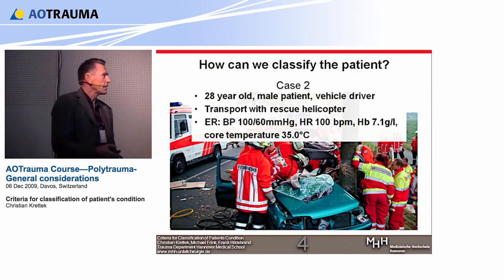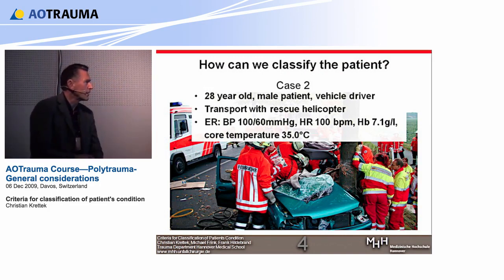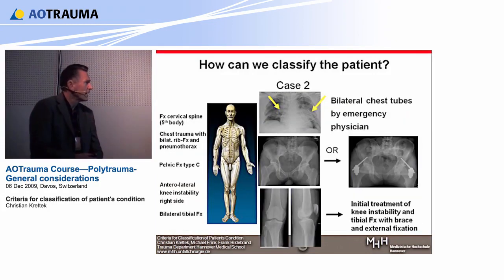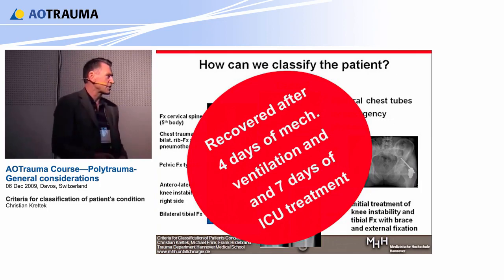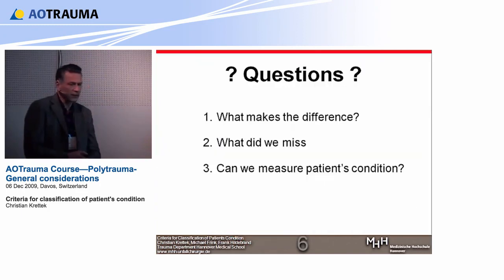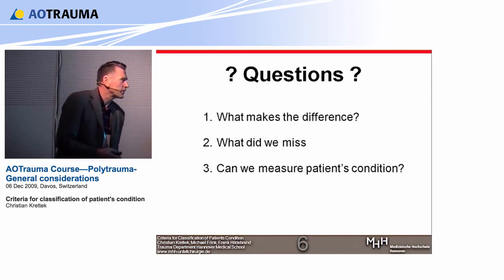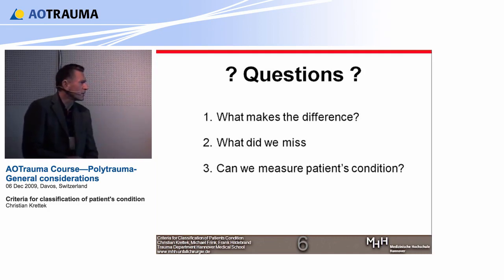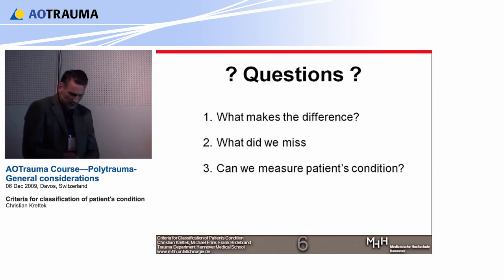Another case, very similar: a young car driver with very similar physiological parameters, similar resuscitation patterns, even more severely injured — but the course of treatment was very simple, very easy: four days of mechanical ventilation, seven days in ICU until transfer to the normal ward. So the questions are: what are the differences between these cases? What do we miss in the judgment of these cases, and how can we measure the patient's condition in order to give them good treatment?